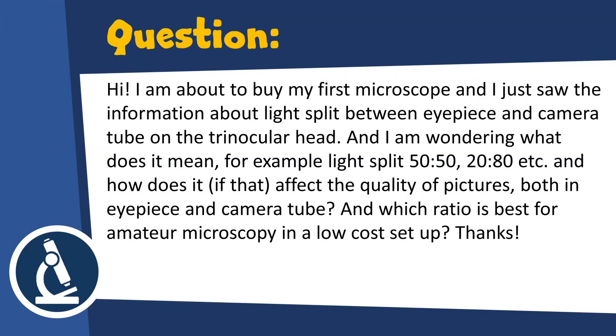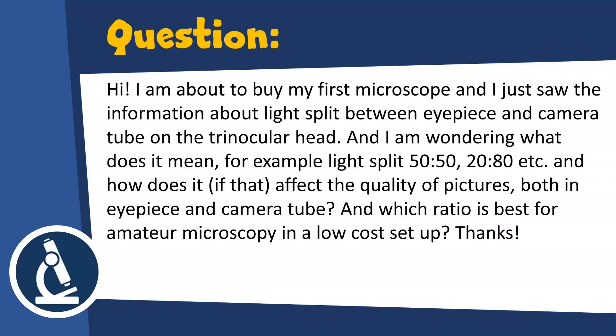Hi, I'm about to buy my first microscope and I've just saw the information about light split between eyepiece and the camera tube. So basically the light split between the eyepiece is here and the camera tube here on a trinocular head. And I'm wondering what does it mean, for example light split 50 to 50 or 20 to 80, and how does it, if at all, affect the quality of the pictures both in eyepiece and in the camera tube? And which ratio is best for amateur microscopy in a low-cost setup?